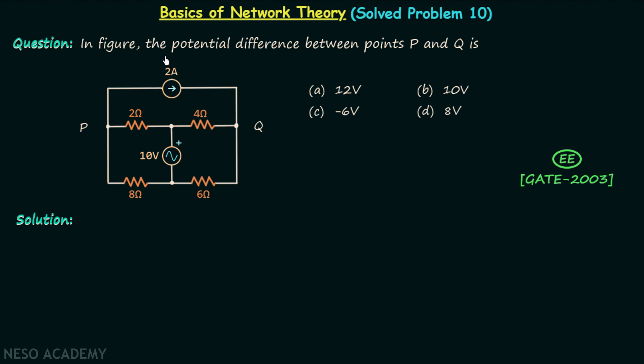In this question we are required to find the potential difference between points P and Q. This means we want to find out the difference in the potentials at this point and at this point. So we want to calculate VPQ which is equal to potential at P minus potential at Q.